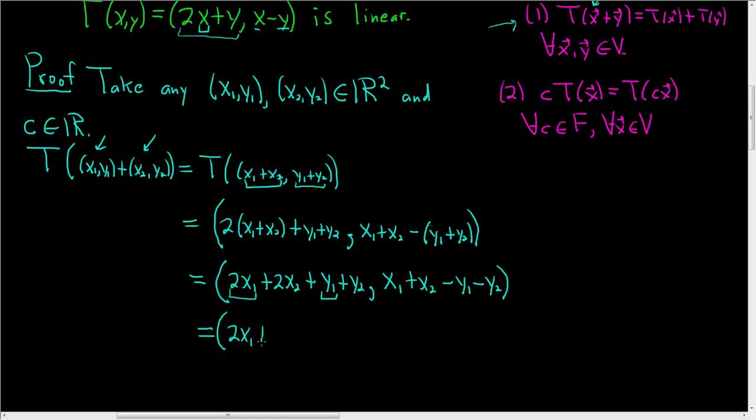So 2x1 plus y1, so 2x1 plus y1 plus, and then here we have 2x2 plus y2. So 2x2 plus y2. You have to be really careful. And then here we have x minus y. So let's group them in a similar fashion. So this is x1 minus y1 plus x2 minus y2.